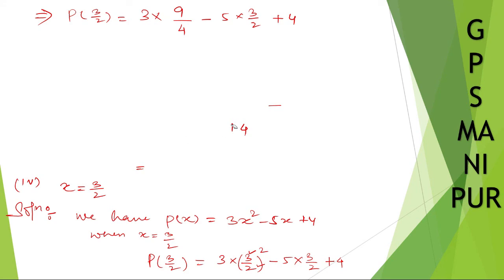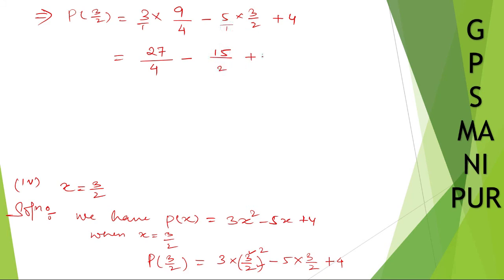Now multiply: 3 into 9/4 gives 27/4. For 5 into 3/2, numerator 5 times 3 is 15, denominator is 2, giving 15/2. Plus 4. Now take the LCM of the denominators 4, 2, and 1 — the LCM is 4.